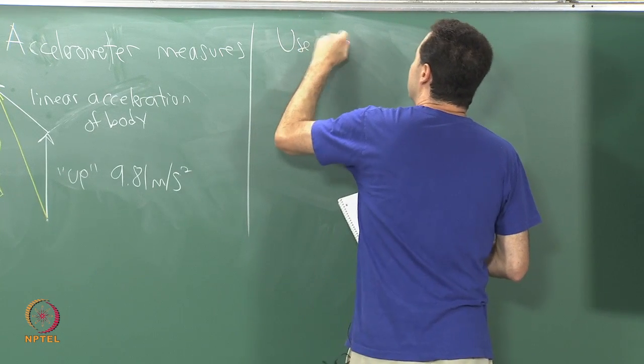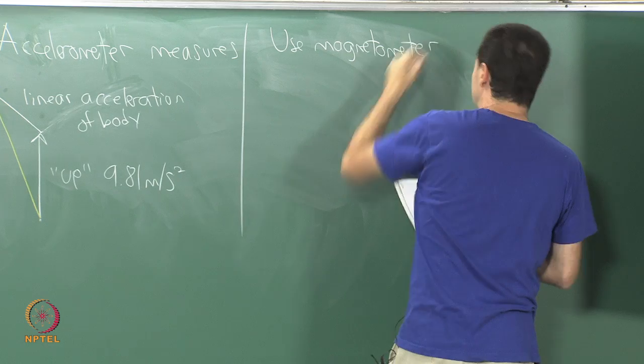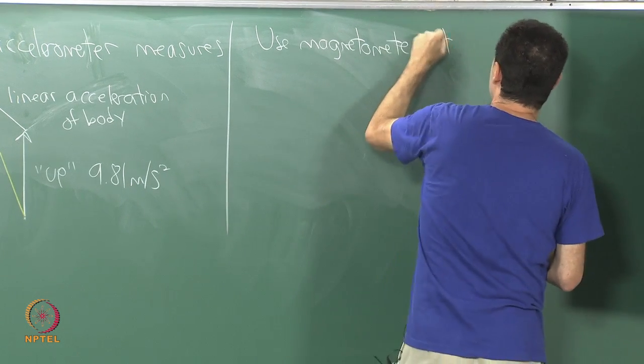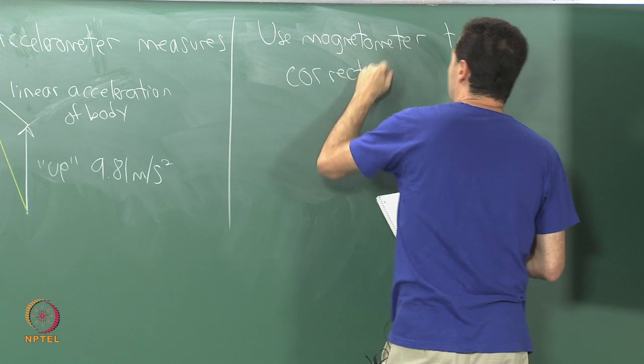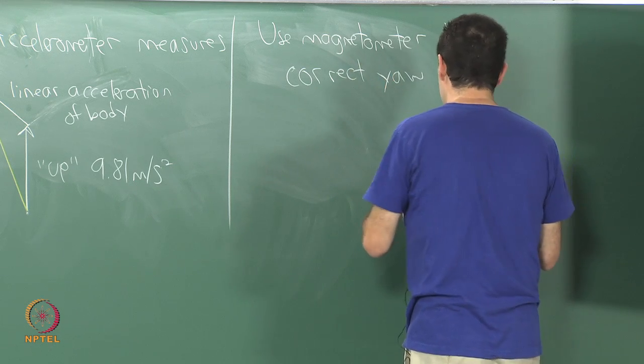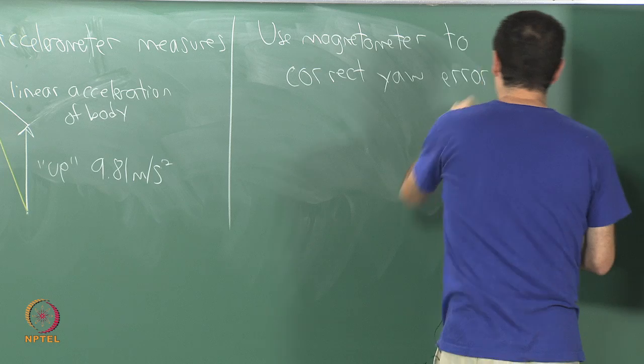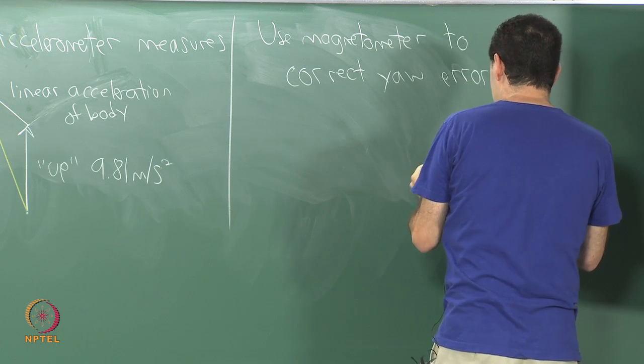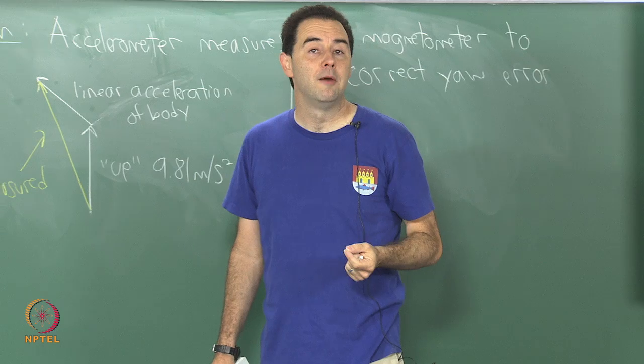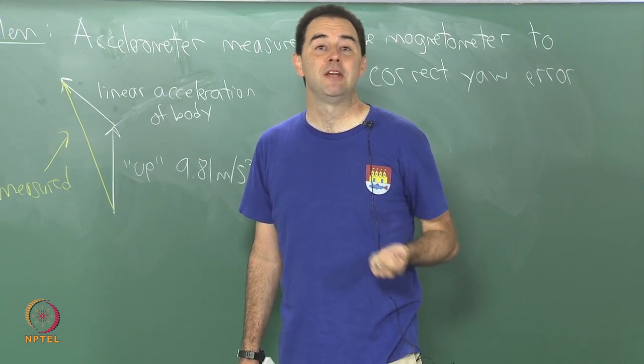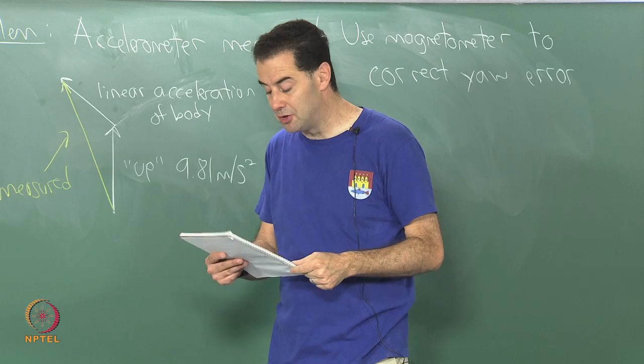So, for yaw, we use the magnetometer to correct yaw error. This is similar to the way we did tilt correction. You have to take a measurement, estimate the amount of error in yaw, and then apply corrections gradually. Again, you can use a complementary filter.